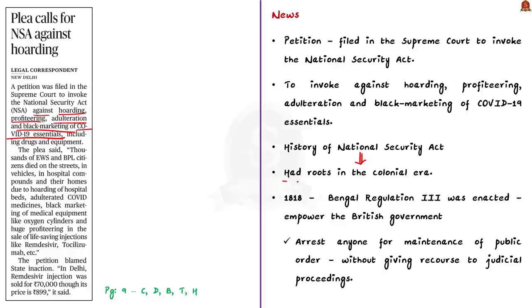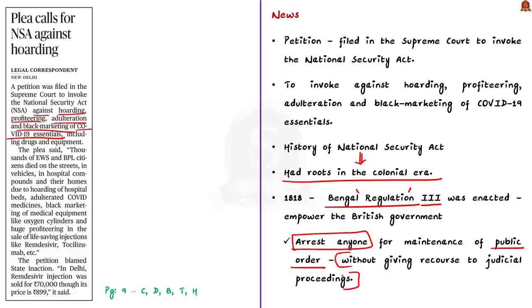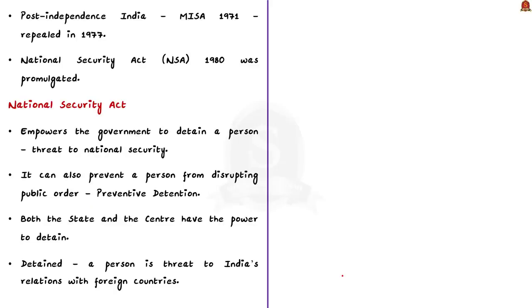The NSA has its roots in the colonial era. In 1818, the Third Bengal Regulation was enacted to empower the British government to arrest anyone for maintenance of public order without giving the person recourse to judicial proceedings. In 1919, the infamous Rowlatt Act allowed confinement of a person without trial. In post-independent India, former Prime Minister Indira Gandhi introduced the controversial Maintenance of Internal Security Act (MISA) in 1971, which was similar to the Rowlatt Act. This act was repealed in 1977, and eventually the National Security Act 1980 was promulgated.